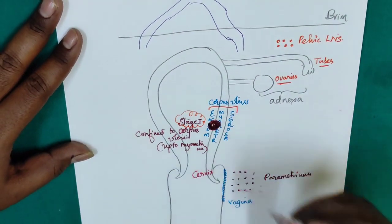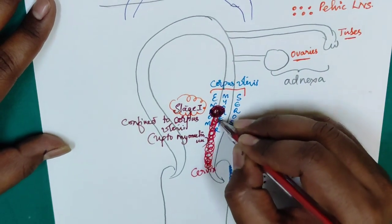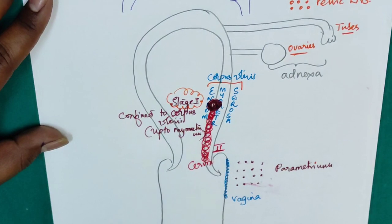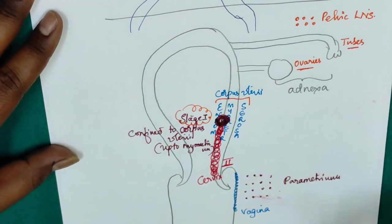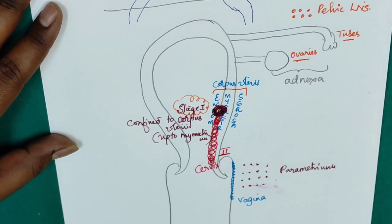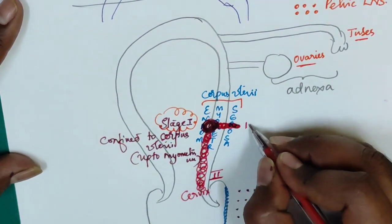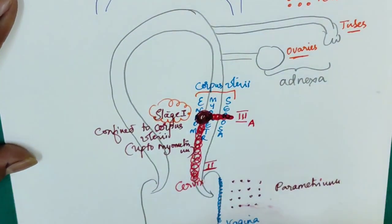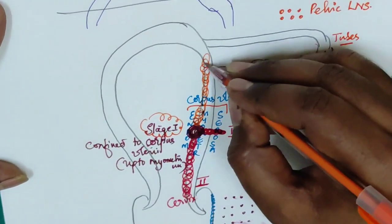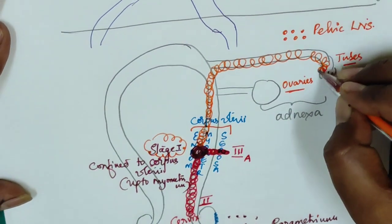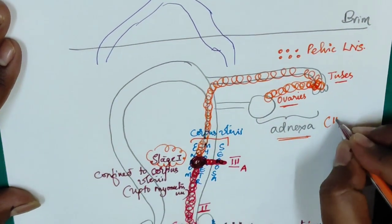Next, when the tumor extends to cervix — see here the tumor is extending to cervix — it is stage 2. Then, after extending to cervix, if the tumor extends to adnexa — see here the tumor is extending to adnexa — adnexa means tubes and ovaries. That is stage 3a.